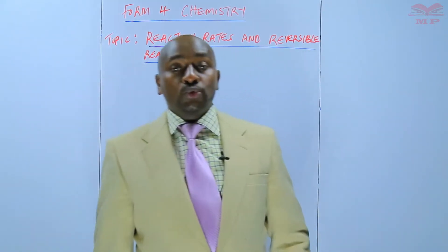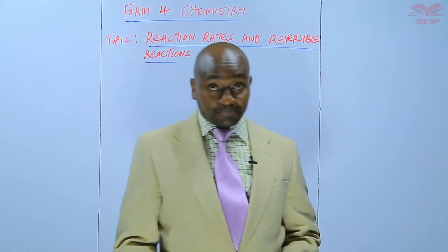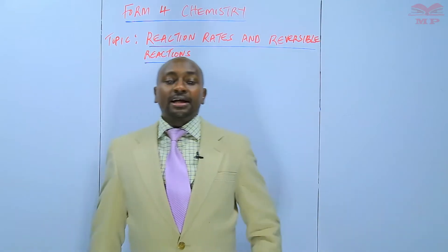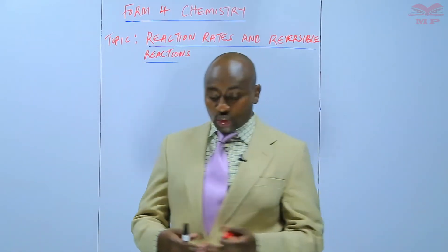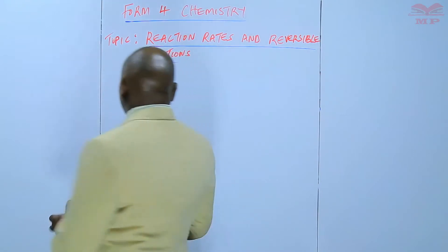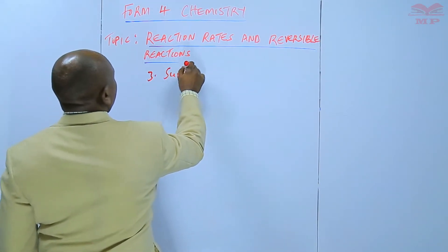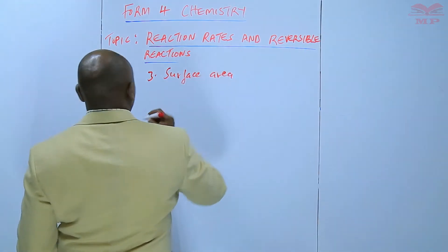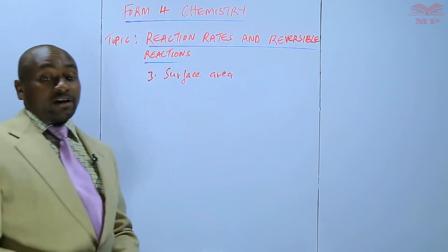We are going to discuss the third factor, and this is surface area. We learnt earlier that surface area is one of the factors that affects the rate of reaction. This is our factor number three: surface area. And we are going to explain that factor in terms of an experiment.